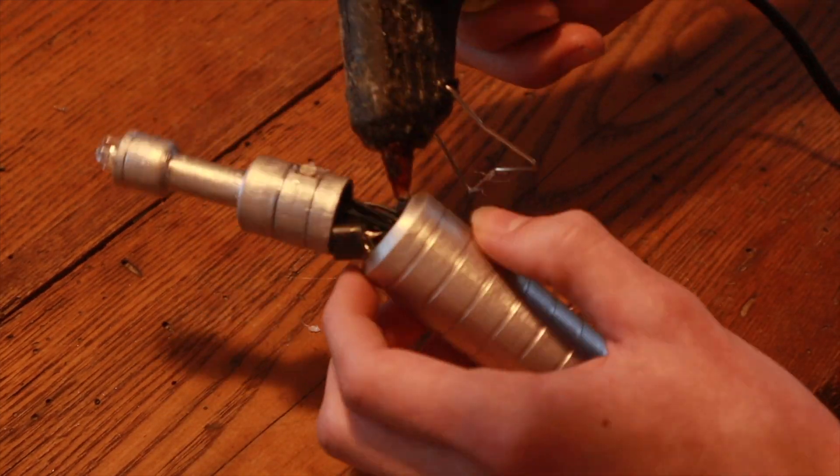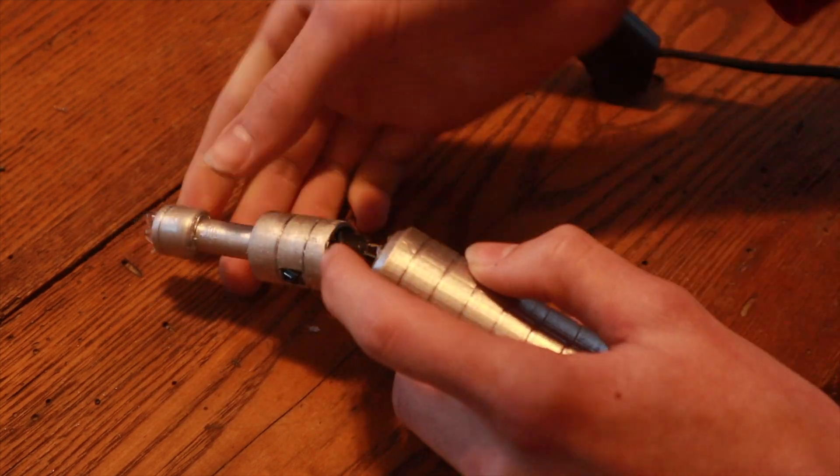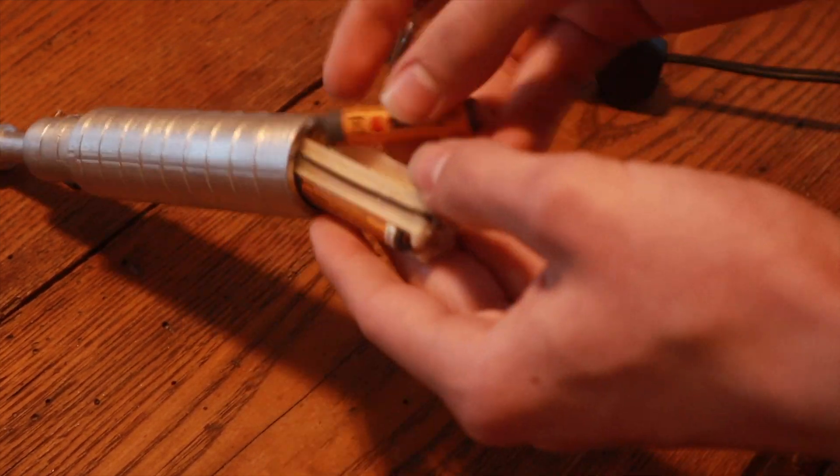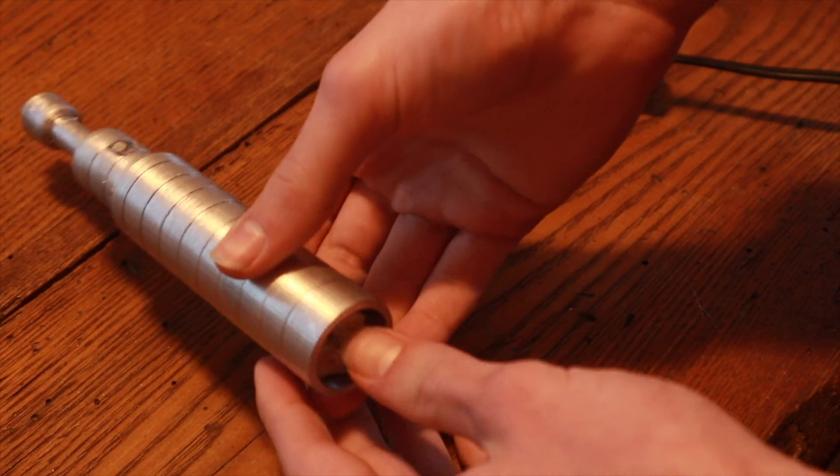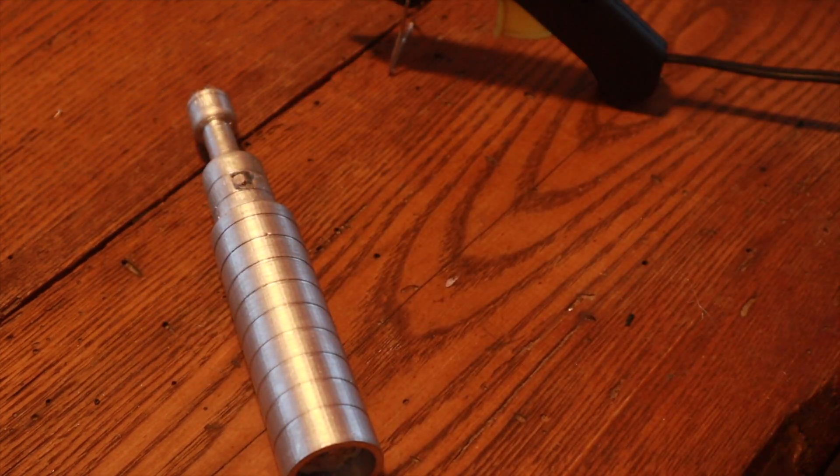Then we can add glue all around this rim on the body here and glue on the top section. The last step is to add the batteries into the battery casing by shaking it out the bottom and then sliding them in, and then we can do the pommel.